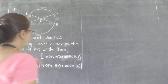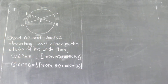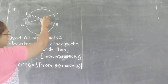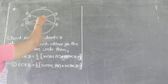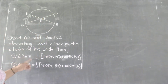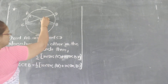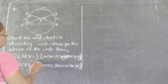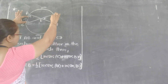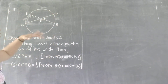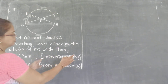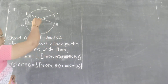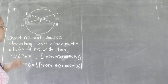Now here, if two chords are intersecting each other in the interior of the circle, then the measure of this angle — measure of angle BED — is equal to half the sum of these two arcs. This angle is equal to this angle, and this angle is equal to this angle.